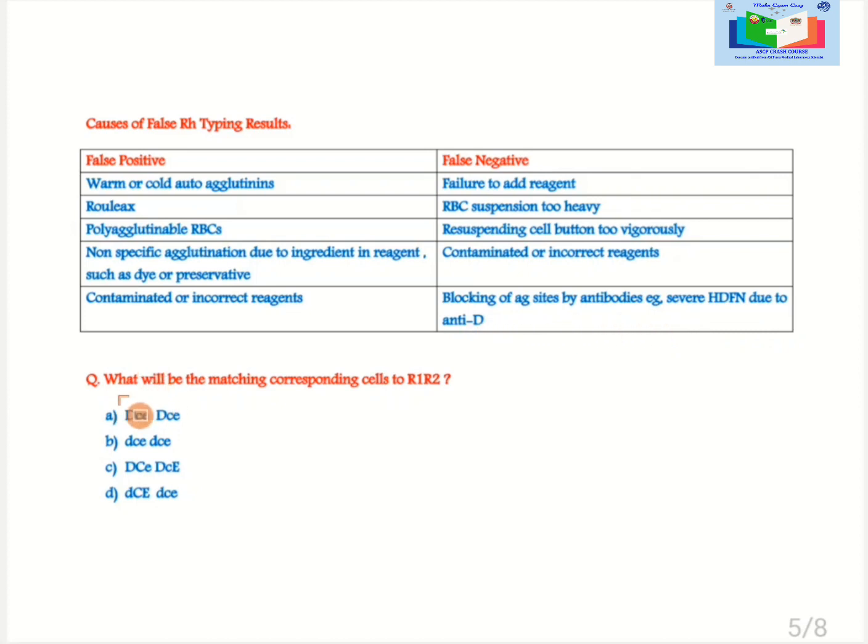Let's break down the Fischer and Wiener terminologies. Before moving on let's see an example. Sometime in blood-banking section during exam we face this type of question. What will be the matching corresponding cells to R1, R2? Option A, B, C and D. So how we will solve it?